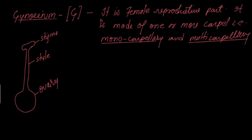Inside the ovary there is an ovule, which remains attached by the placenta. This is the ovule and this is the placenta. Just like a child is attached to its mother, similarly the ovule is attached to the placenta.